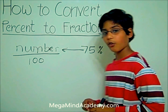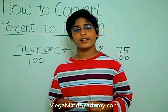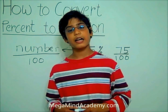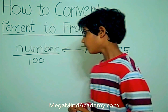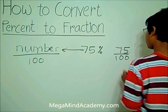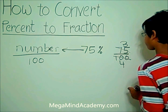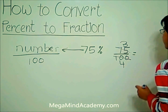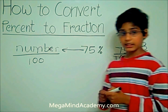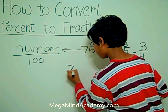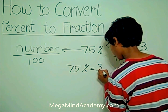Is this the simplest form of the fraction? No, because both numbers are divisible by twenty-five. Twenty-five times three equals seventy-five, and twenty-five times four equals one hundred. So you cross out seventy-five and put three, and you cross out one hundred and put four. Our new fraction is three over four. So that means seventy-five percent equals three over four.